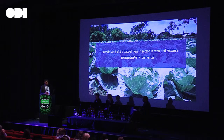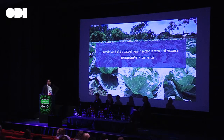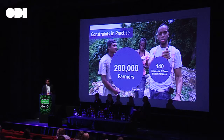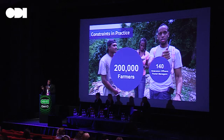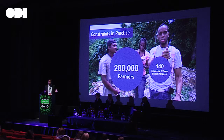We've been working with agencies in Jamaica to think about some of those problems. In Jamaica, agriculture employs about 19% of the population and contributes about 9% of GDP, which translates to about 200,000 registered farmers in the country. But for all the agencies responsible for providing extension support to that farming population, there are only about 140 extension officers.